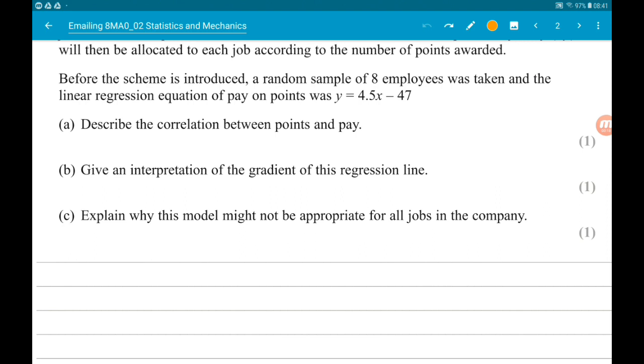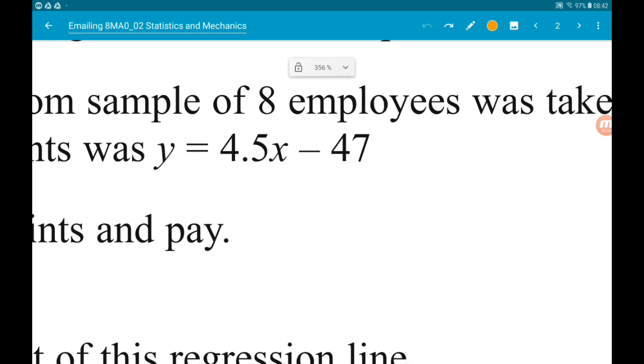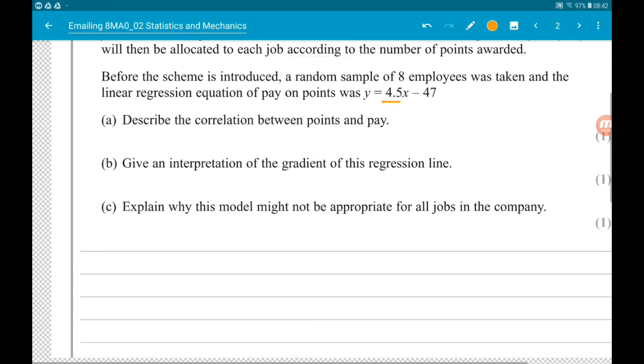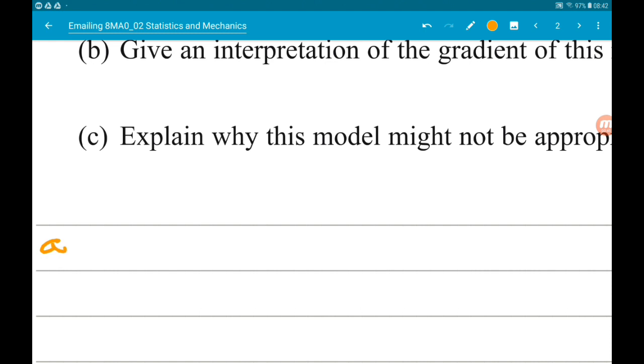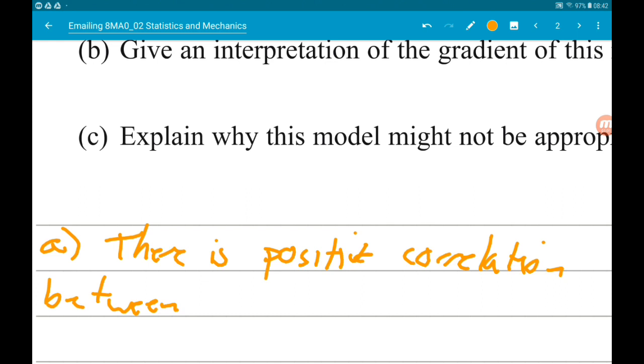Part A asks us to describe the correlation between points and pay. So the correlation is dependent on the gradient of the line. So the gradient is 4.5 which is positive. So we would say for part A, there is positive correlation between points and pay.